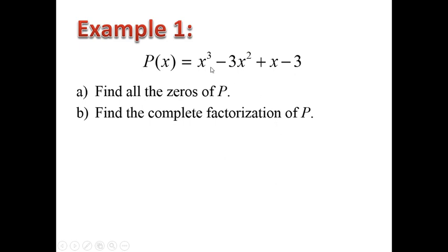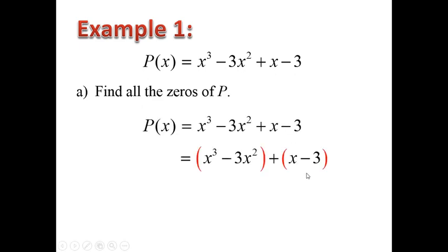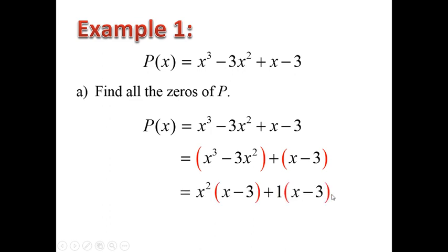As you can see, here is a polynomial. The first thing we want to try is to factor it. If that doesn't work, then we try to use P over Q and then synthetic division. We try factoring by grouping — group the first two terms together and the last two terms together. For the first two terms, x squared is the greatest common factor, so we pull it out first.